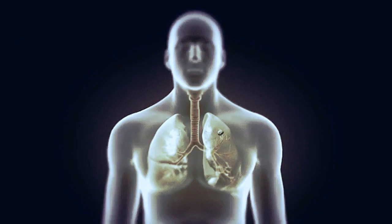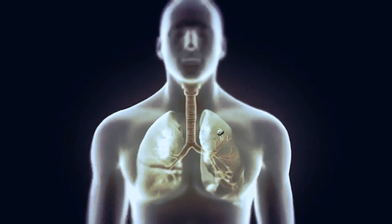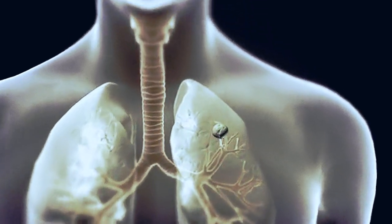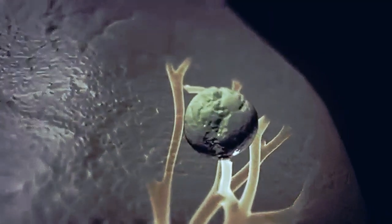A granuloma is formed to keep the bacteria from spreading. The TB bacteria remain in the lungs, but the body is protected from disease by the granuloma.